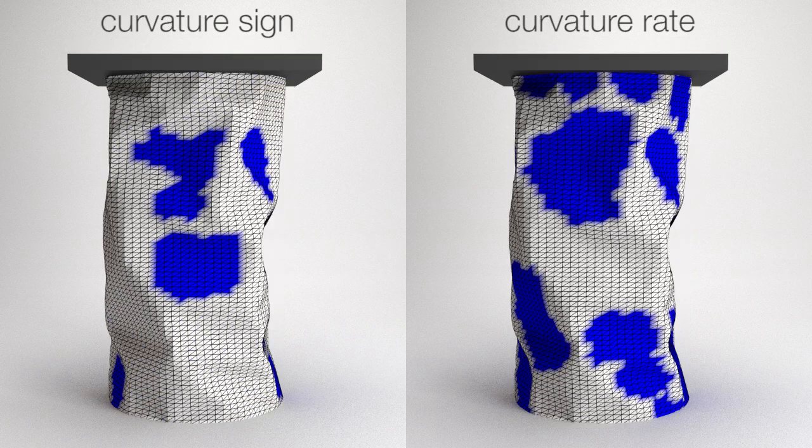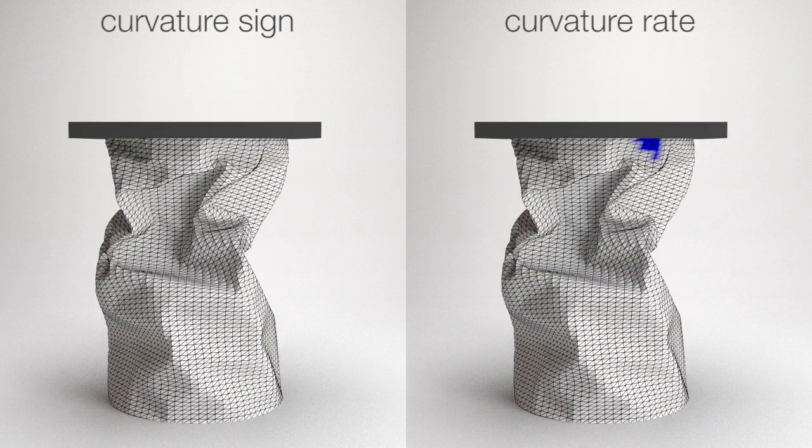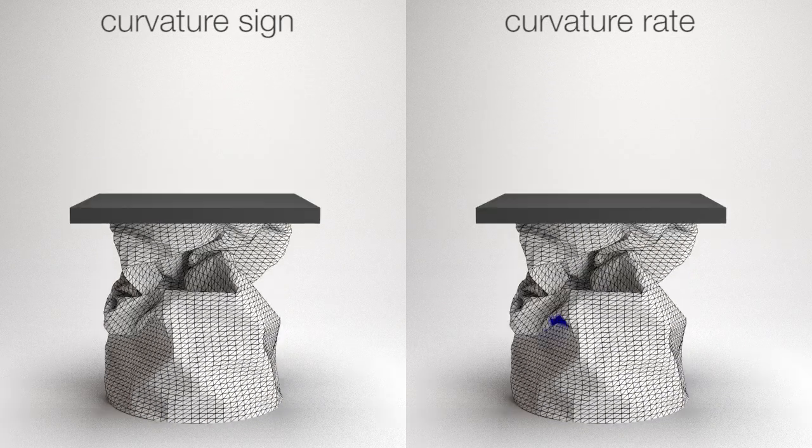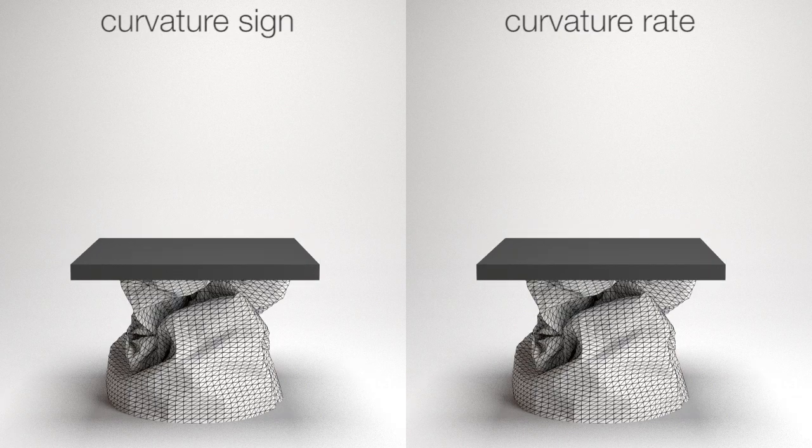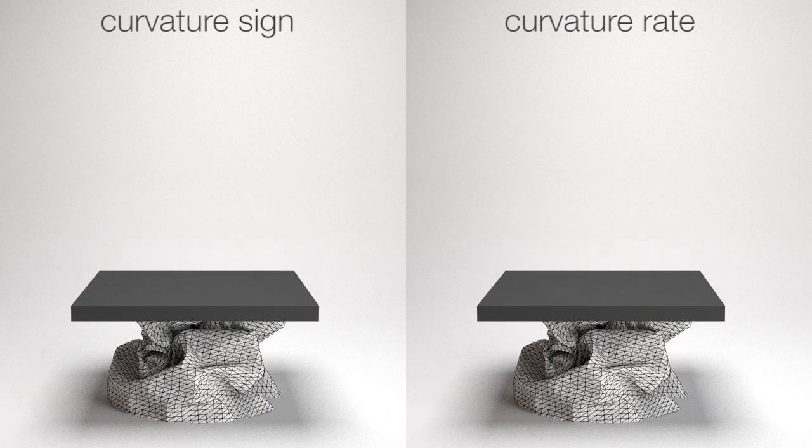Now we compare our curvature rate metric with previous curvature sign change detection methods. We can see that our metric yields more detailed buckling regions. Here are the sounds.